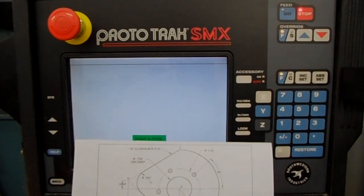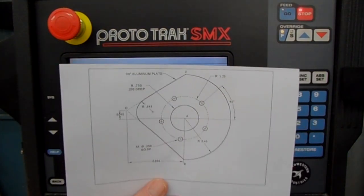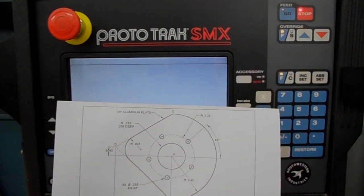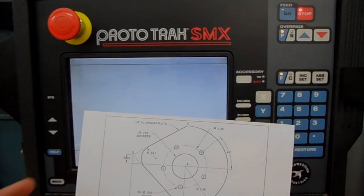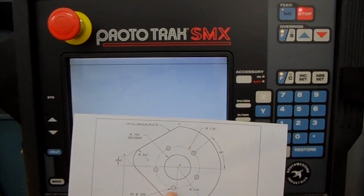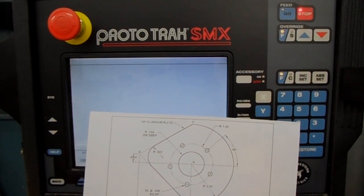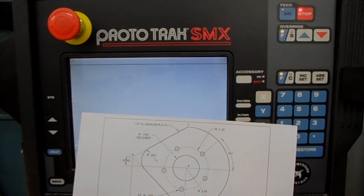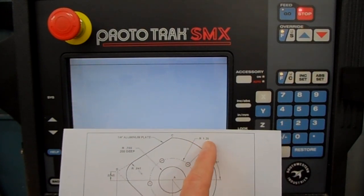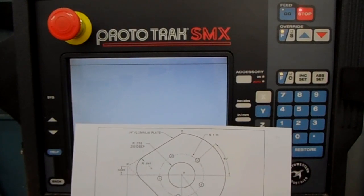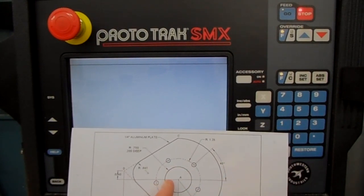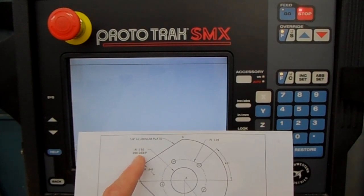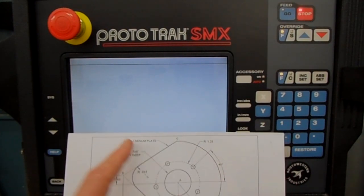The next job we're going to program is this one right here. We refer to it as the ballpark because it kind of looks like a ballpark. On this print, there's a bolt hole pattern that needs to be drilled — five times 0.250 diameter, equally spaced. The radius of that bolt pattern is an inch and a quarter. We also have a circular milled pocket, 0.750 radius, 0.200 deep. The material is quarter-inch aluminum.